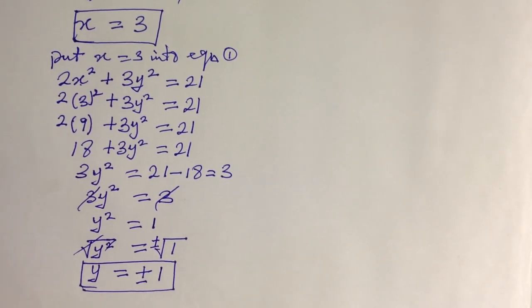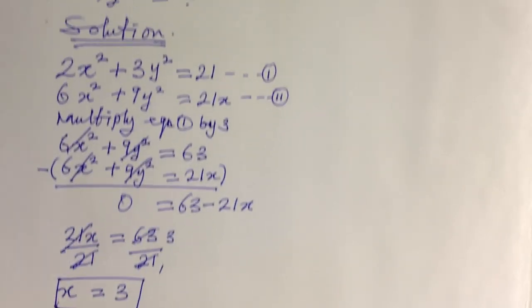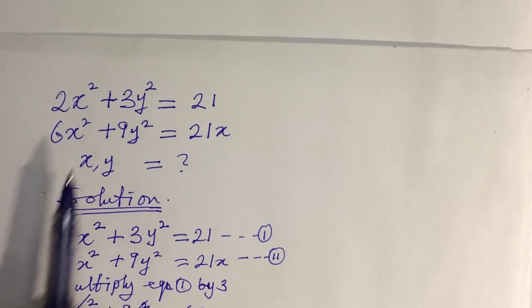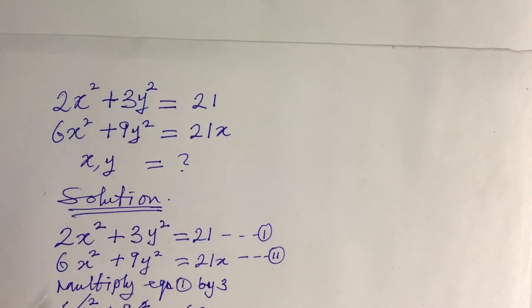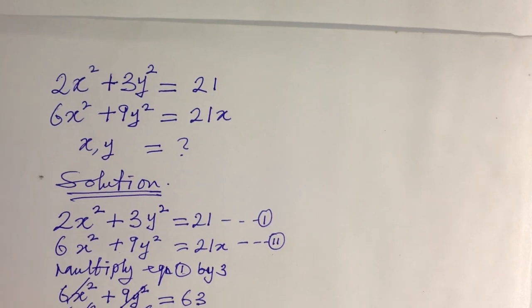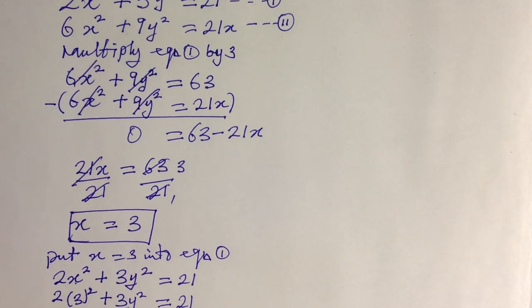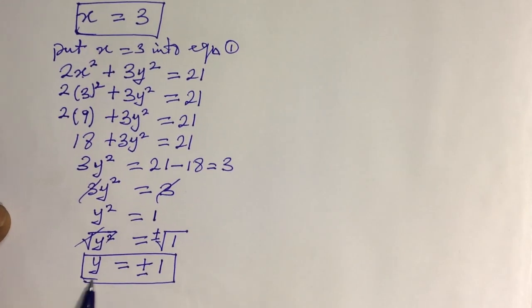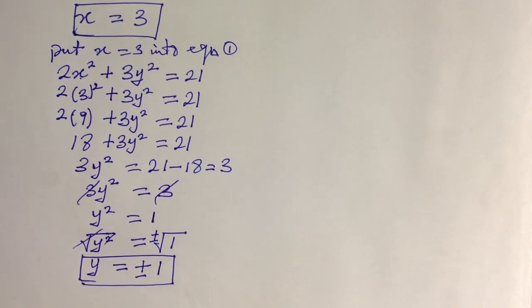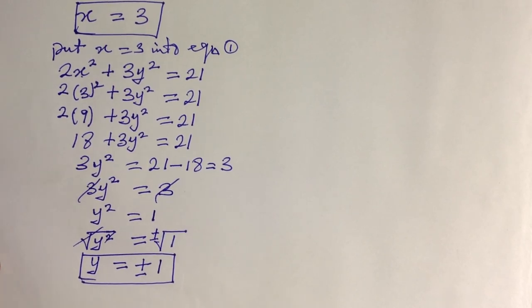In the original equations we have quadratics, so we are expected to solve for two different values for both x and y. We have only one value for x so far, so to get the second value for x we pick one of the y values and substitute it back into Equation 1.